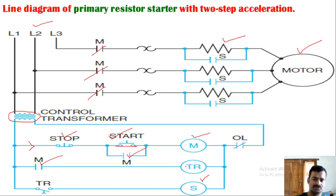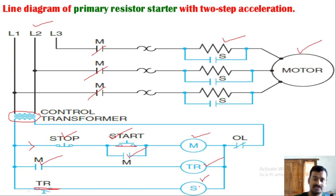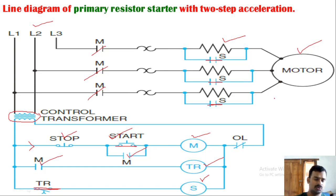Based on the preset timer — say 5 or 10 seconds — the timer closes its contact, energizing the starting contactor S. This closes the S contact, which bypasses the starting resistor, connecting full supply voltage to the motor. In stage one, the motor runs at reduced voltage with reduced speed, torque, and current. After the preset time, the starting resistor is removed and the motor accelerates to full load speed and condition.